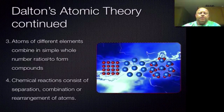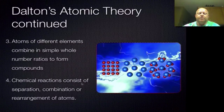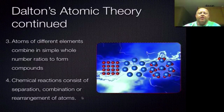Parts 3 and 4 still hold true today. Part 3: atoms of different elements combine in simple whole number ratios to form compounds — you can't use half an atom; you need whole number ratios. Part 4: chemical reactions consist of the separation, combination, or rearrangement of atoms. In the early 1800s, alchemy — the idea of turning lead into gold — was still prevalent, so stating that chemistry only separates, combines, or rearranges atoms was a powerful claim. Today it seems like common sense, but back then it really wasn't.